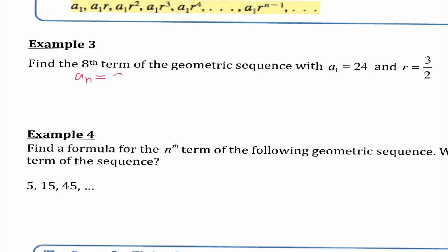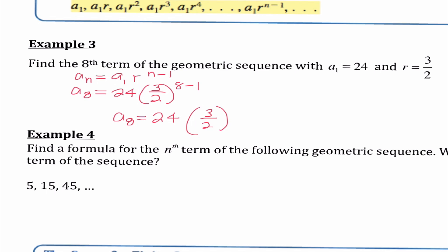Number 3: find the 8th term of the geometric sequence with a₁ = 24 and r = three-halves. Using aₙ = a₁ times r to the (n−1) power: a₈ = 24 times (3/2) to the (8−1) power, which is 24 times (3/2) to the 7th. Using a calculator with math fraction to simplify, I get 6,561 over 16. A lot of this chapter comes down to knowing those formulas really well.